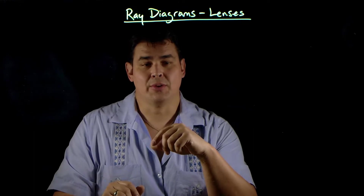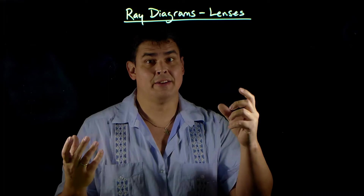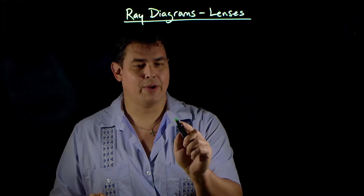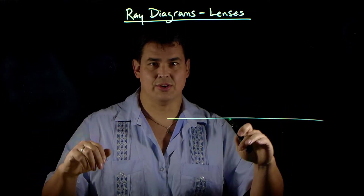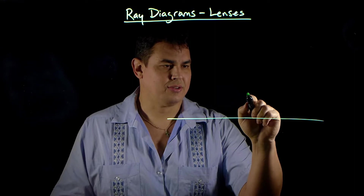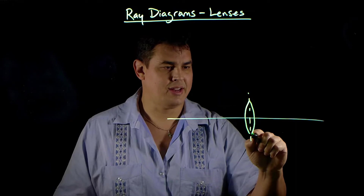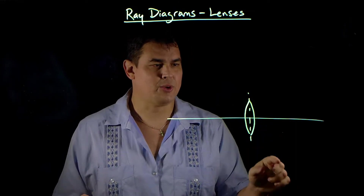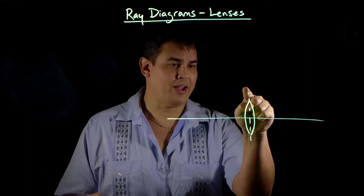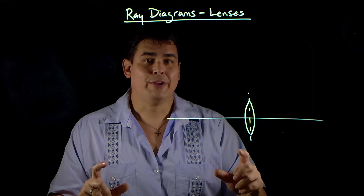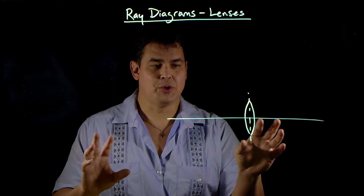Let's practice making a ray diagram to see what happens when you put an object in front of a lens at different distances. The first thing for a ray diagram is you draw the principal axis — just a line that represents zero. Then you draw your lens, and I'm going to draw a vertex right here. That represents where the lens is. The light actually interacts with the lens at that vertex.